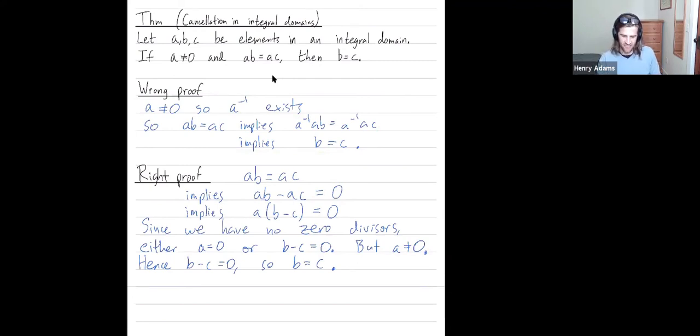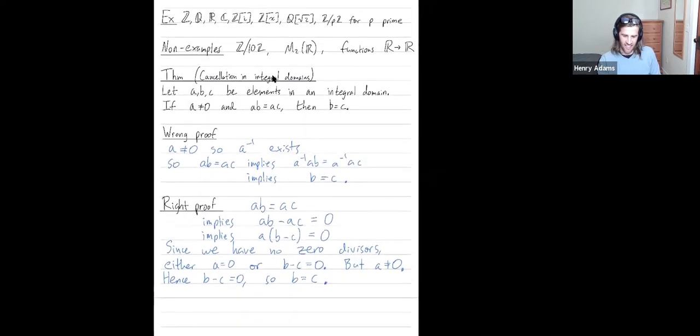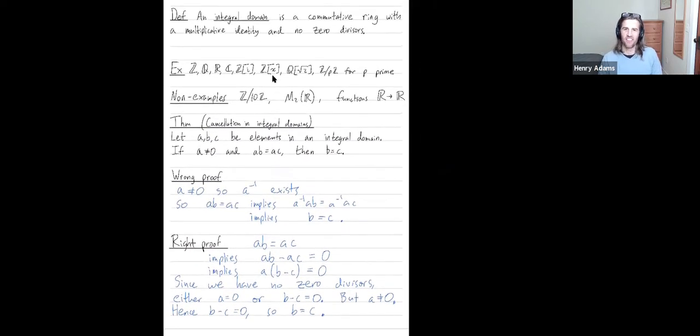In summary, integral domains are particular types of rings. They are commutative rings with no zero divisors. Z mod 12Z, for example, is not an integral domain because it has zero divisors. 3 times 4 is equal to 12 or zero. And we saw at the beginning of this video how the cancellation property is false in Z mod 12Z.